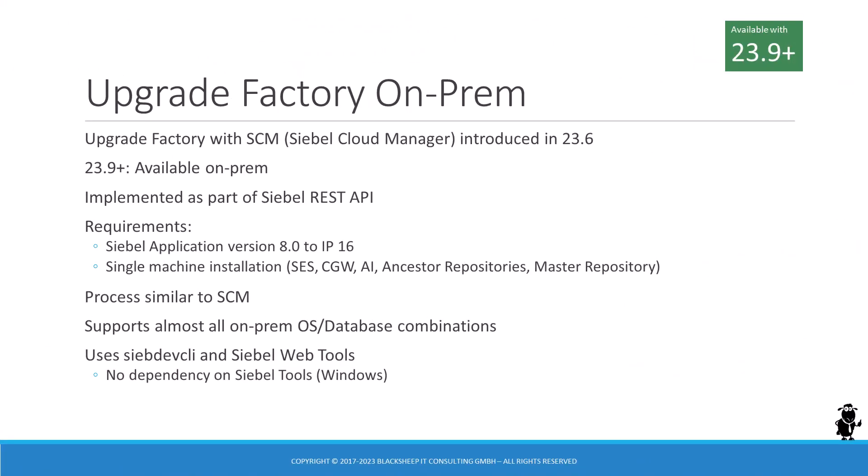The Siebel REST API, hosted on the AI Tomcat, now supports requests to kick off and manage the upgrade process for a development database on a single-stack server, supporting almost all OS and database combinations that you can use to run Siebel CRM on-prem. A big difference to a classic upgrade is the independence from the Windows-based Siebel Tools client — the Upgrade Factory uses SiebDevCLI and Siebel Web Tools. Siebel Upgrade Factory supports prior Siebel versions 8 to IP16. Stay tuned for updates in the description below and on the Siebel Hub.